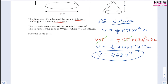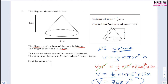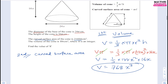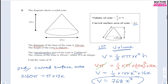Now we use the curved surface area. The formula gives 2160π = π × r × l, so 2160π = π × 12x × l. We need to find l, the slant height. Drawing a right-angled triangle on the cone with height 16x and radius 12x, we use Pythagoras to find l.